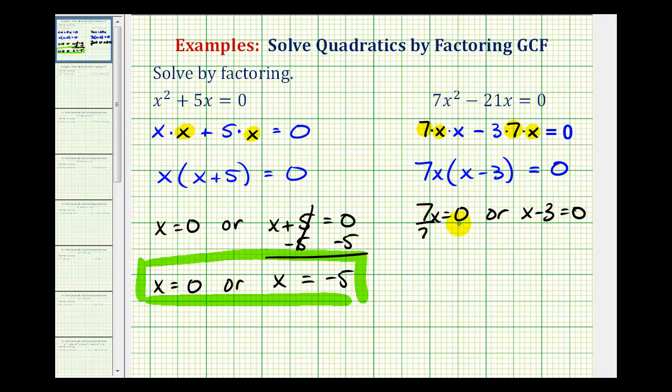So here we divide both sides of the equation by seven, so we have x equals zero divided by seven is zero. And for the second equation, we would add three to both sides of the equation, so it would give us x equals positive three.